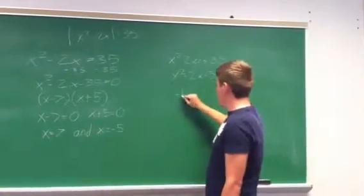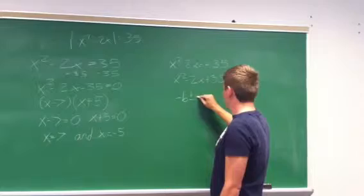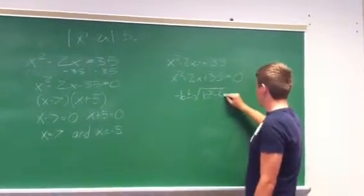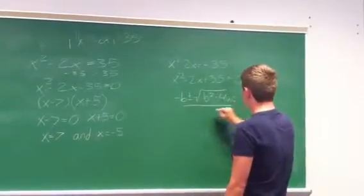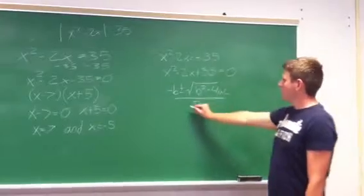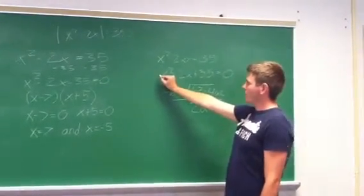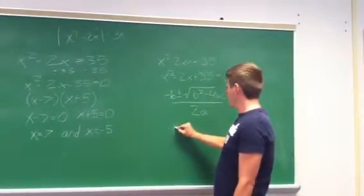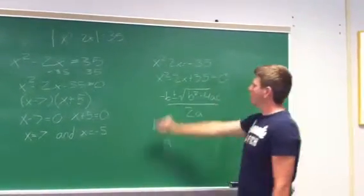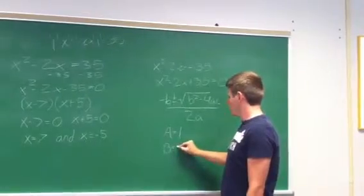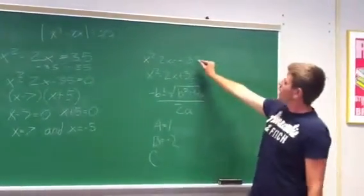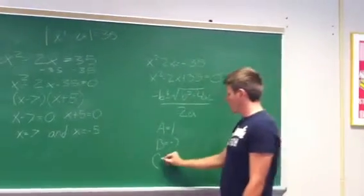which is negative b plus or minus the square root of b squared minus 4ac over 2a. Your a is the number in front of x, which in this case is 1. Your b is going to be the number in front of this x, which is negative 2. And your c is going to be this number here, so it's going to equal 35.